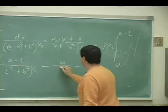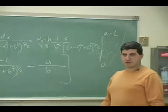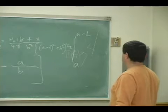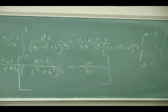So I'm just left with B. I think now it's right. A minus L over L squared plus B squared, and then if you put in A, minus A over B.